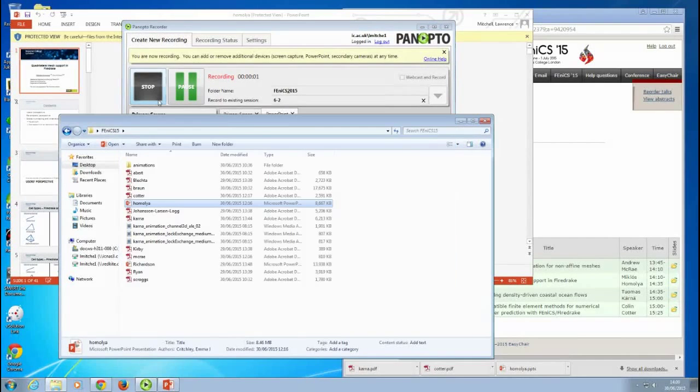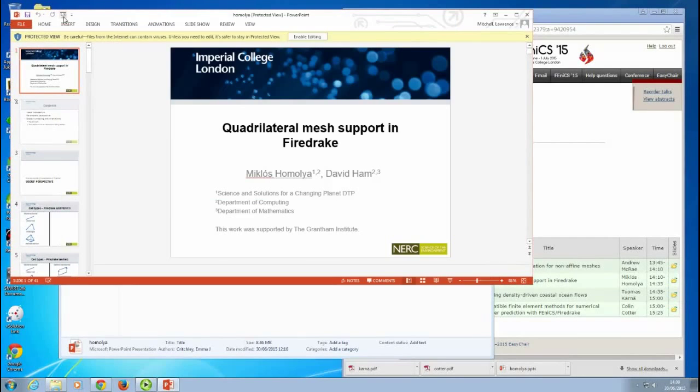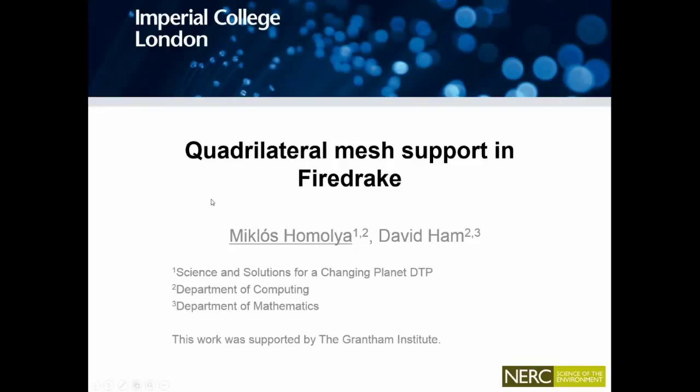We're talking about quadrilateral mesh support in FireDrake. So I'm going to talk about quadrilateral mesh support in FireDrake. There are different perspectives on this. I'm going to start with the user's perspective. As current and potential users, what kind of features are supported by FireDrake? What does FireDrake offer to those who want to solve PDEs on quadrilateral meshes?